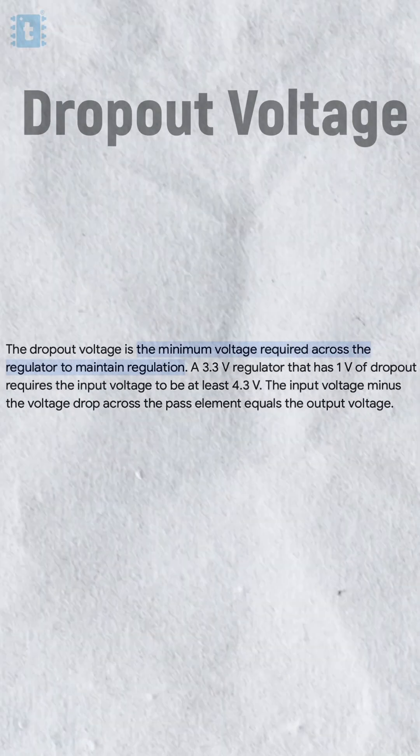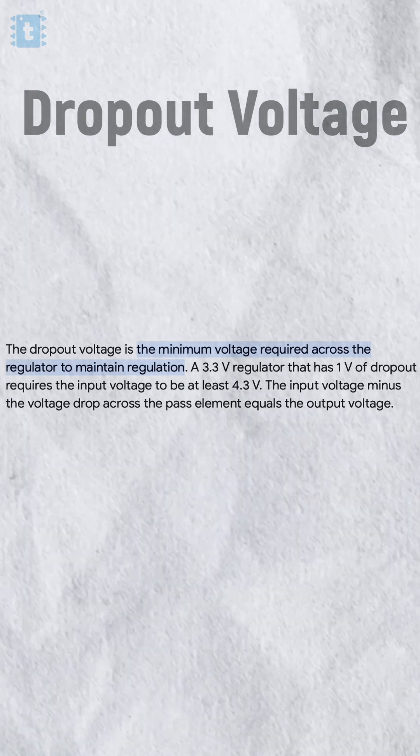Well, because of one parameter called dropout voltage. The dropout voltage is a parameter which decides the minimum input voltage required for an IC to give stable output voltage.